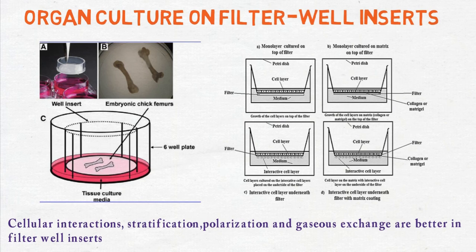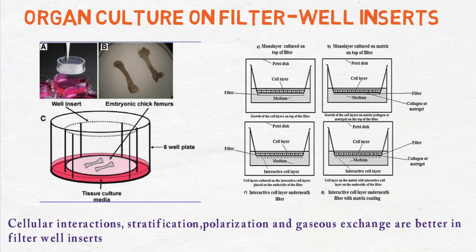The first one shows the growth of a cell layer on the top of the filter, while the next one shows the growth of cells on the matrix — either collagen or matricel — on the top of the filter. Figure C depicts the cell culture grown on interactive cell layers placed on the underside of the filter, while the last one shows the cell layer grown on the matrix with an interactive cell layer on the underside of the filter. Filter well inserts have been successfully used to develop functionally integrated thyroid epithelium, stratified epidermis, and intestinal epithelium.